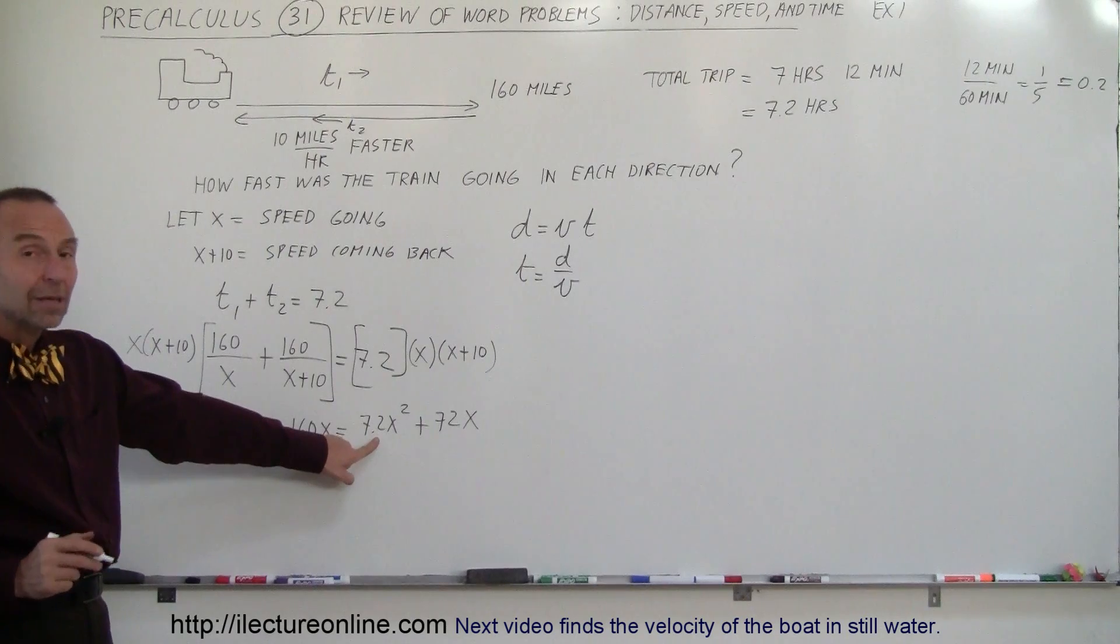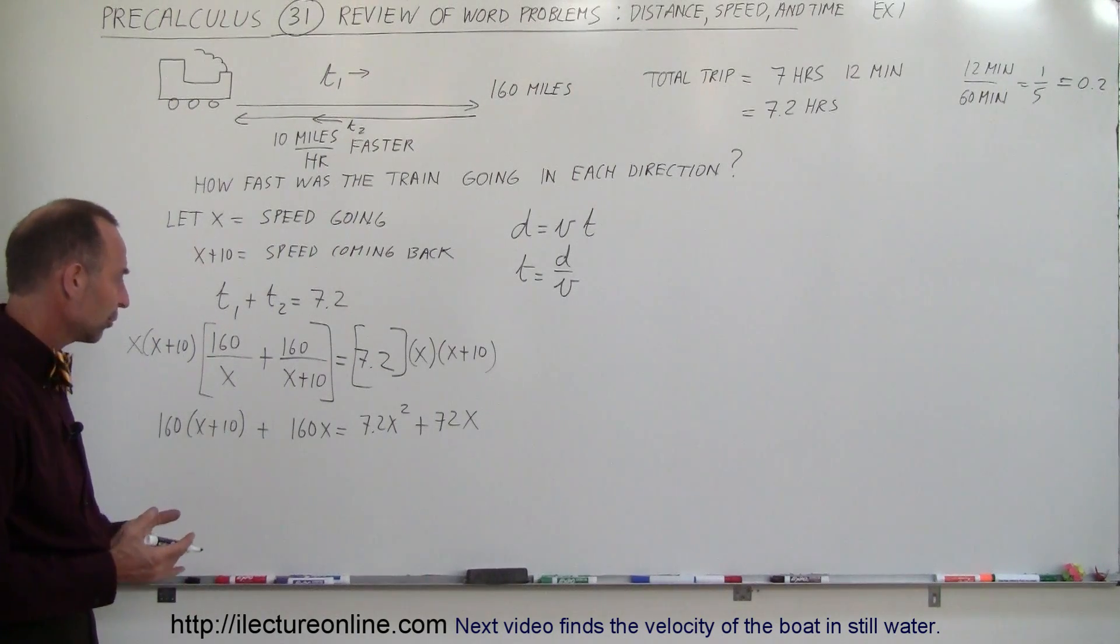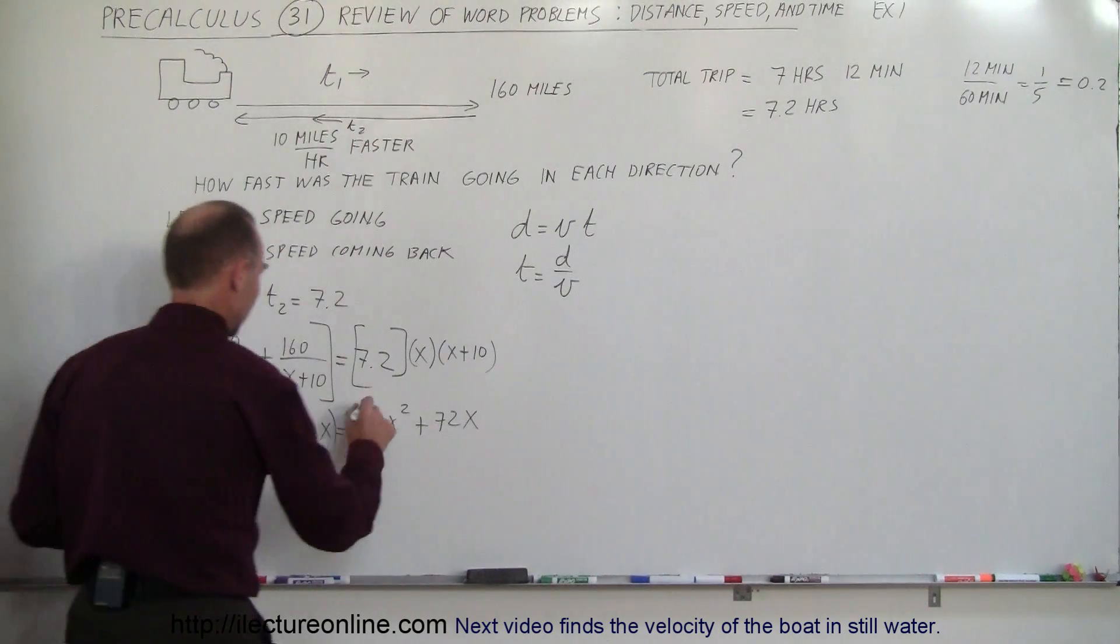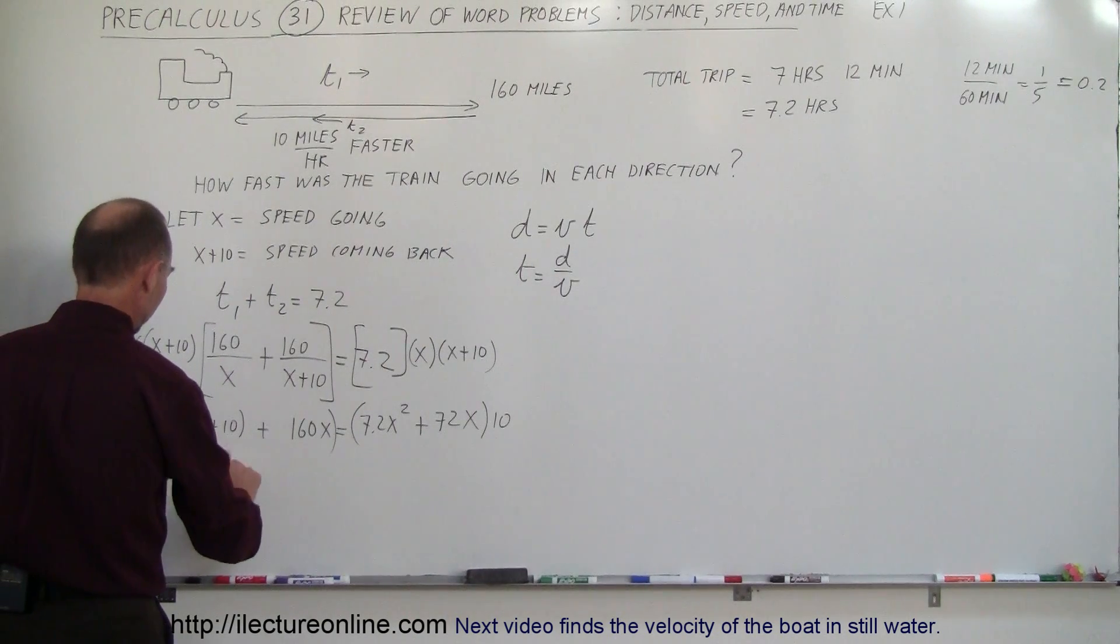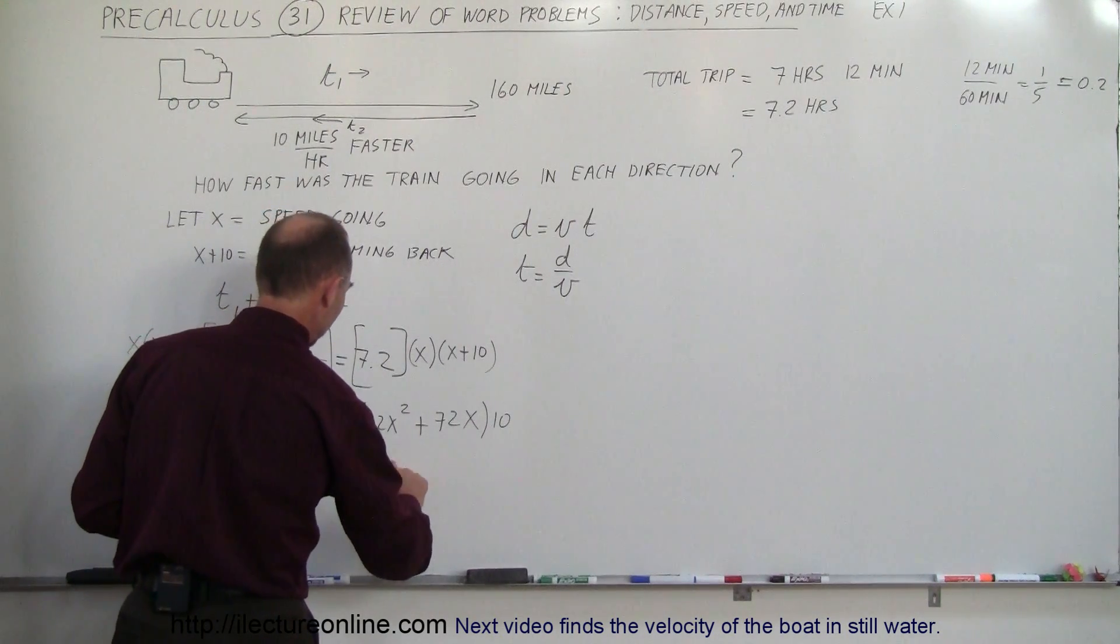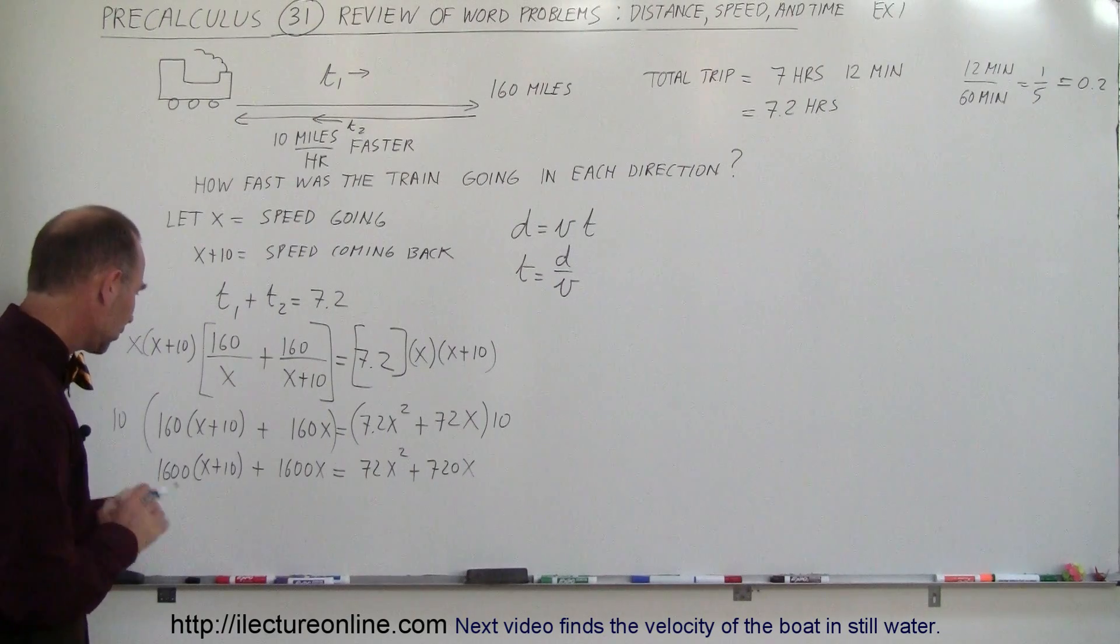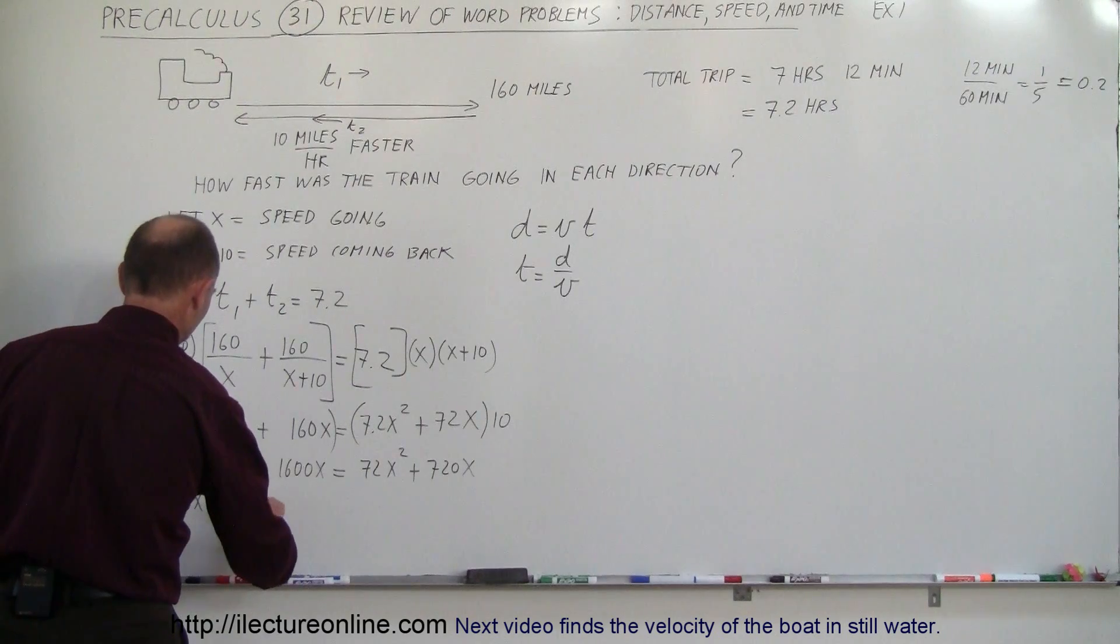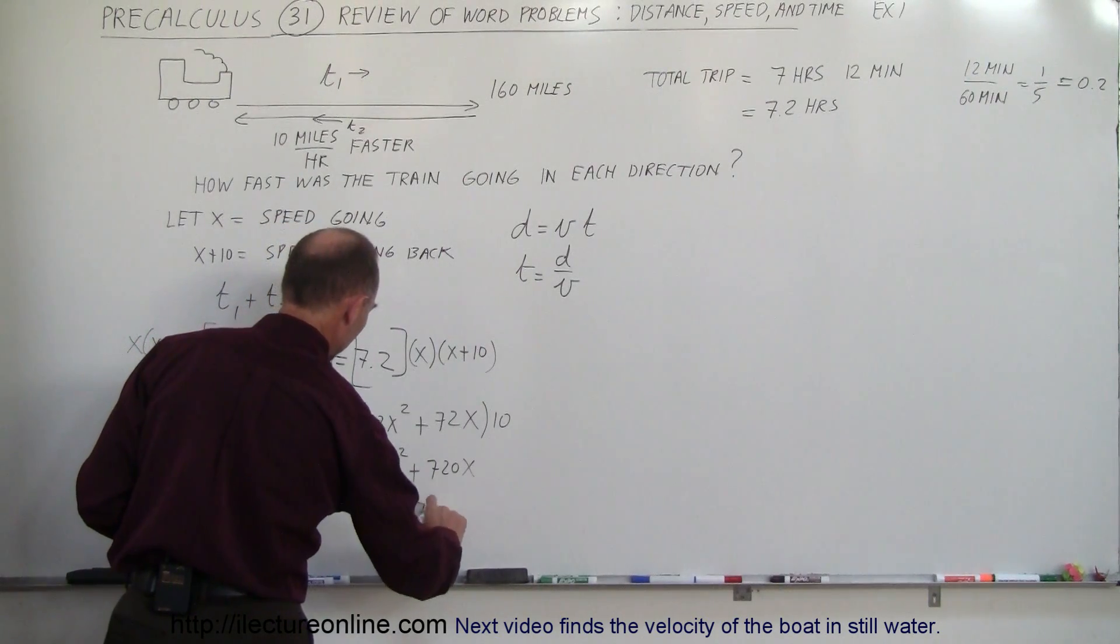So it looks like we want to get rid of the decimal place here. We want to get rid of the parentheses. Let's get rid of the decimal place. So we're going to multiply both sides by 10. That gives us 1,600 times x plus 10, plus 1,600x equals 72x squared plus 720x. Now we have no decimals left. Next, we want to get rid of the parentheses. So this gives us 1,600x plus 16,000 plus 1,600x equals 72x squared plus 720x.